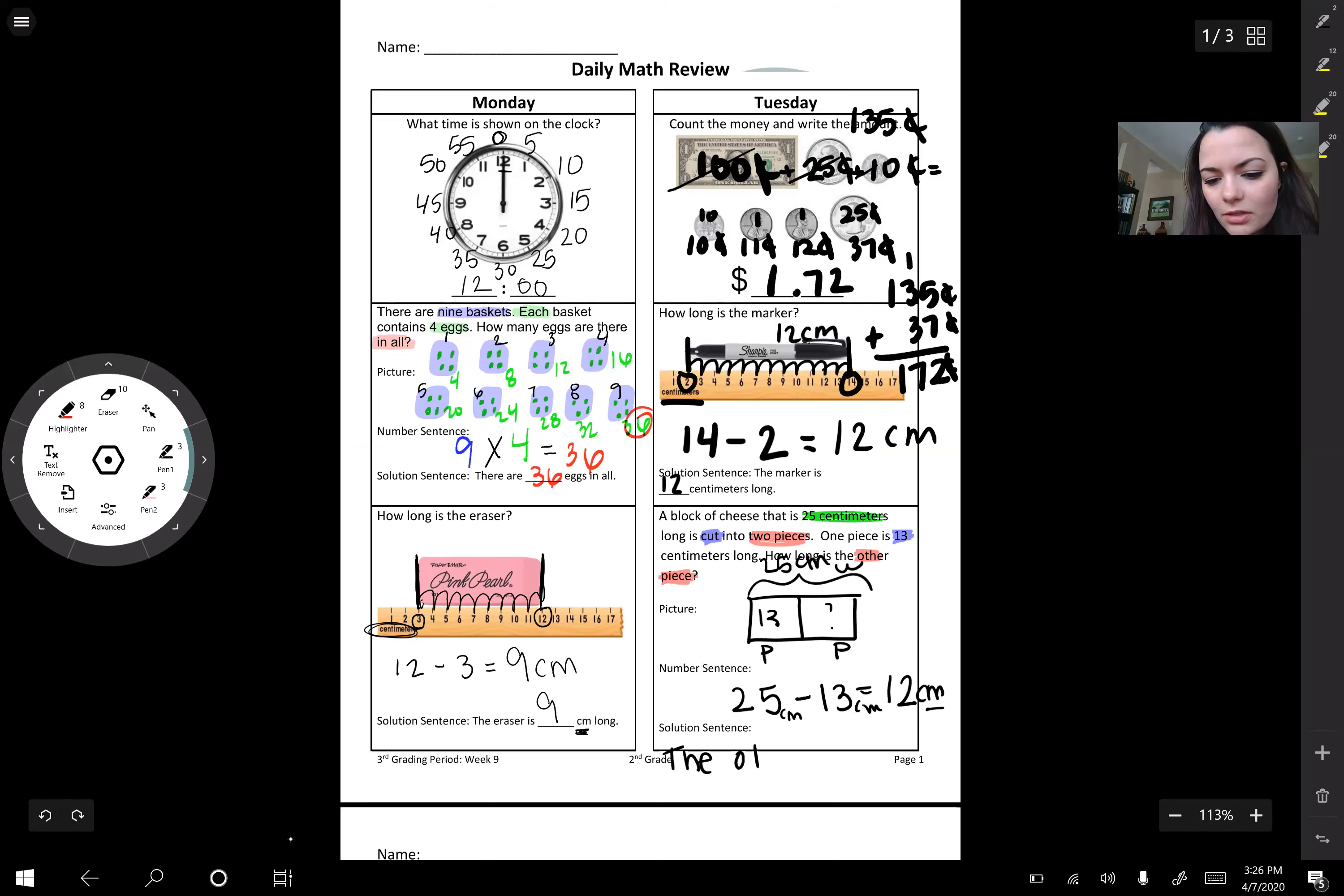Our solution sentence, we're going to write in words. How long is the other piece? The other piece is 12 centimeters long. Okay. So that is it for the Tuesday Daily Math Review. I don't know if you have any questions. And have a great Wednesday, I guess it is now. All right. Bye.